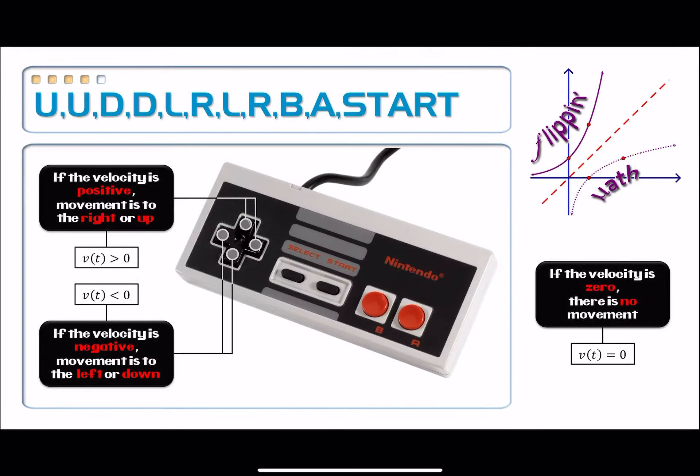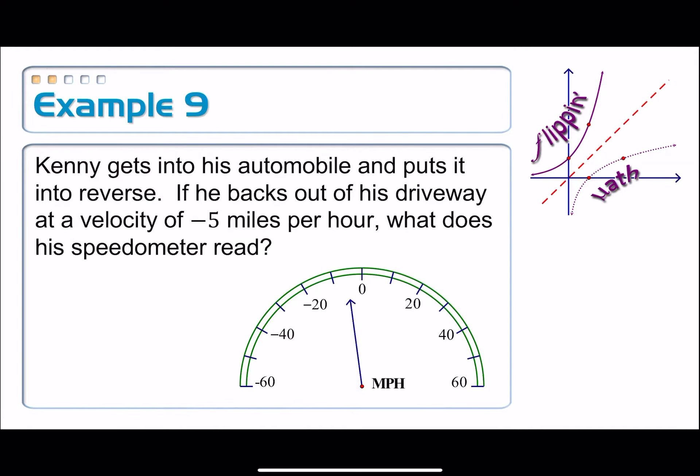All right, we've got one more question, which is going to lead us to the last part of this lesson, or at least this objective. Kenny gets into his automobile and puts it into reverse. If he backs out of his driveway at a velocity of negative five miles per hour, what does his speedometer read?